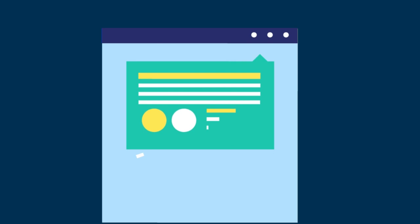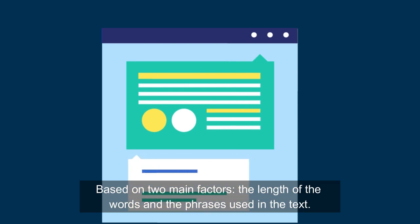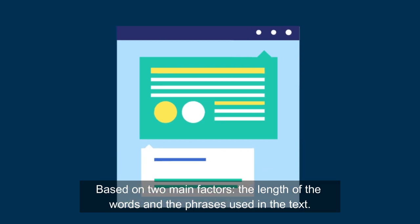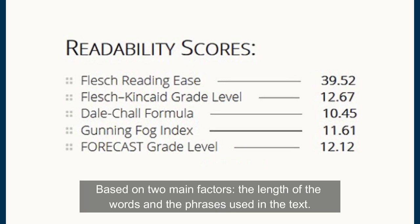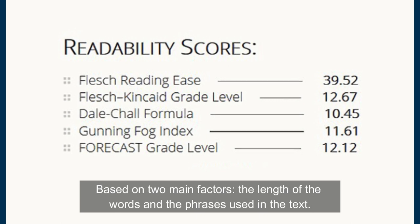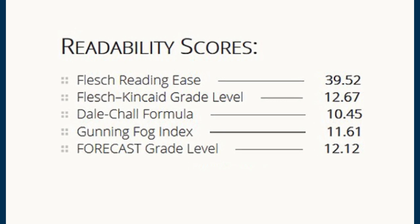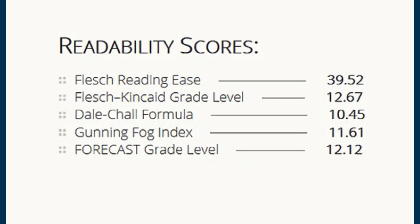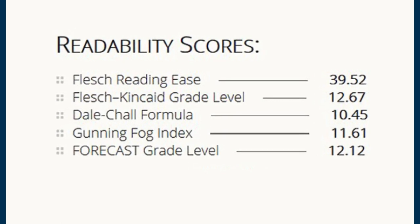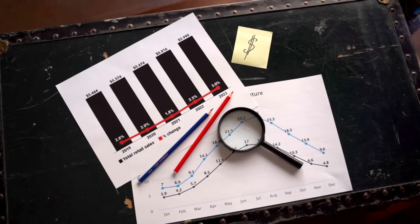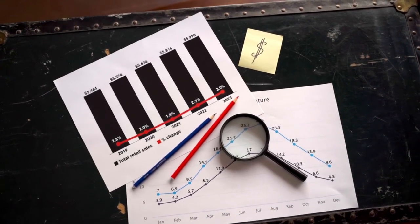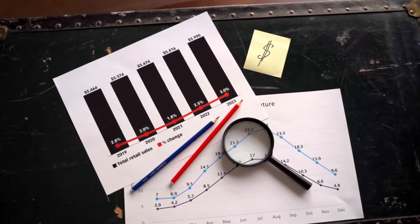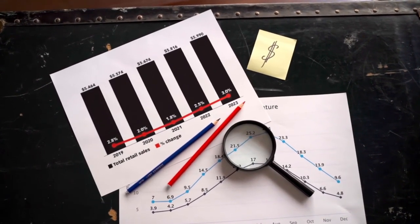The Flesch Reading Ease score is based on two main factors: the length of the words and the phrases used in the text. The shorter the words and phrases, the easier the reading will be. In general, the higher the score, the easier the text will be to read.